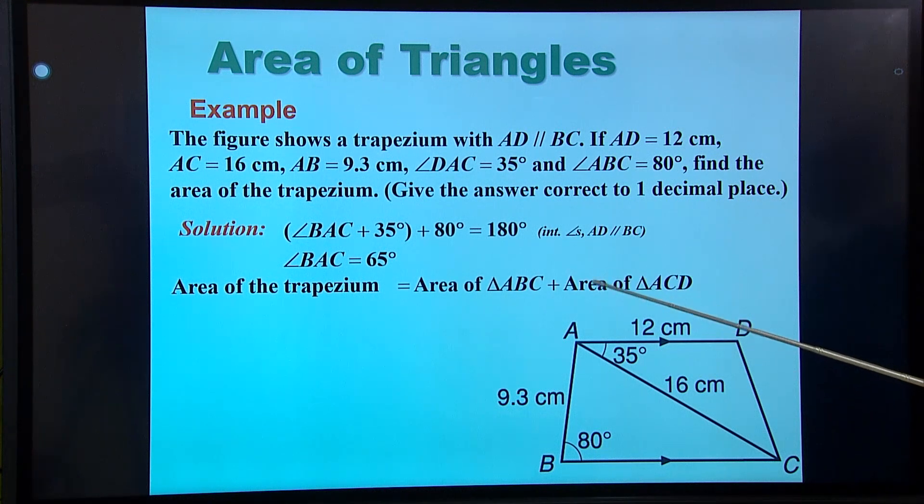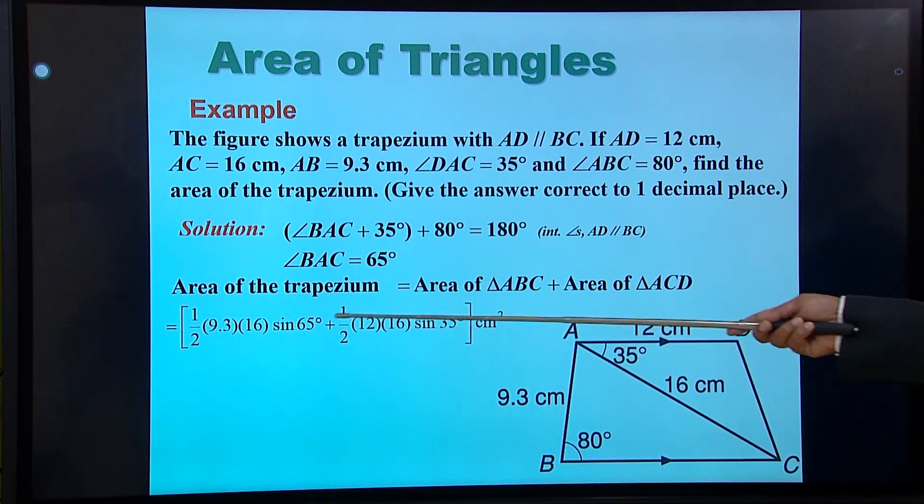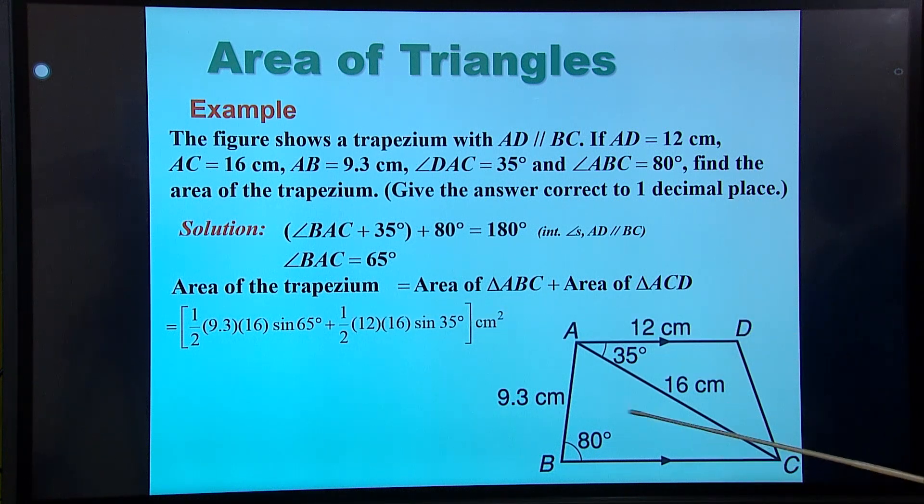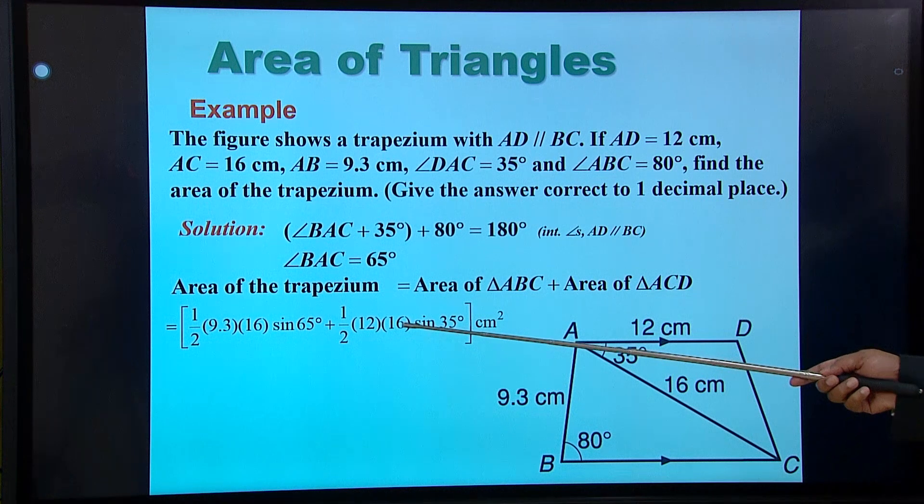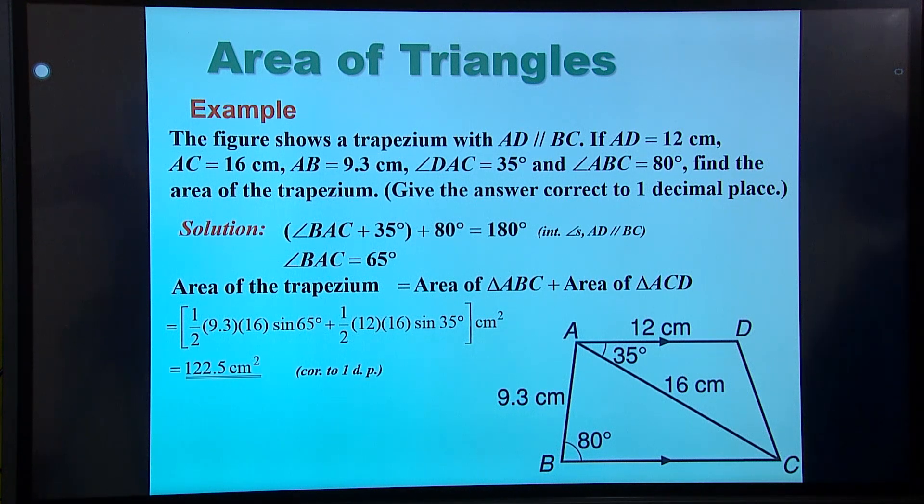And then the area of the trapezium is the area of the two triangles. And I substitute then half AB sine C. So half AB sine C, and half 12 times 16. 12 times 16, sine 35. And that's your answer. Correct to one decimal place.